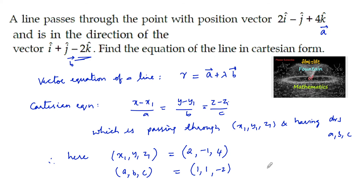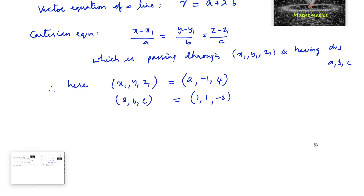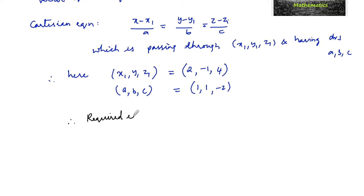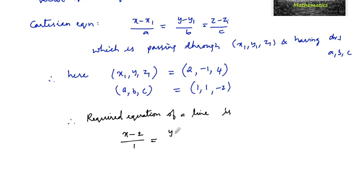From the parallel vector b, the required equation of a line in Cartesian form is: (x - 2)/1 = (y - (-1))/1 = (z - 4)/(-2).